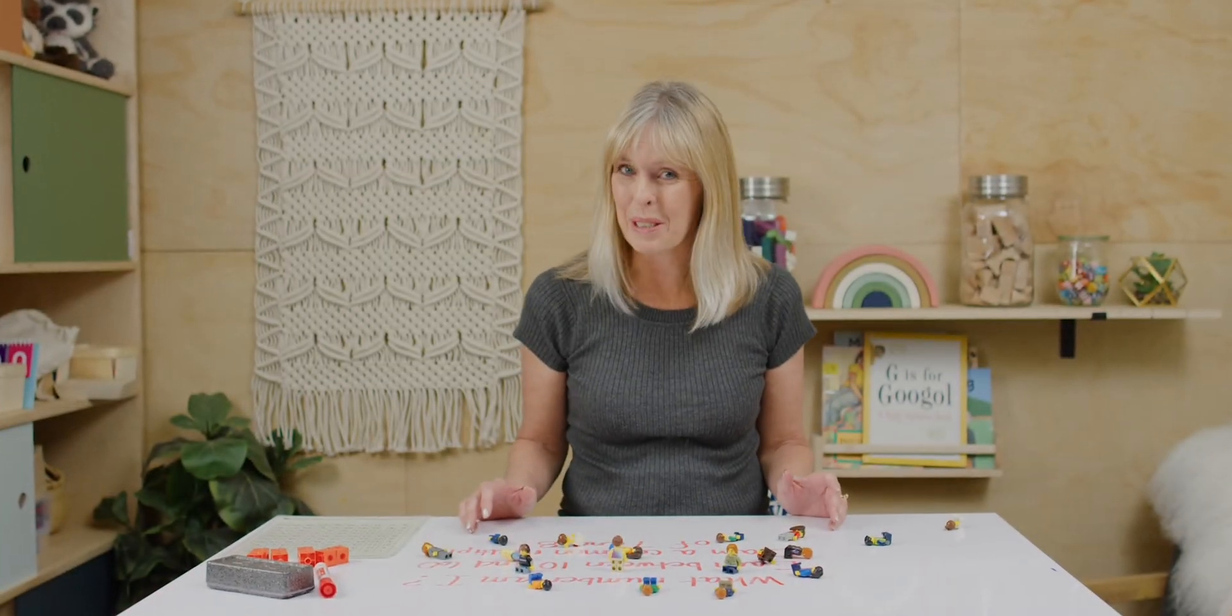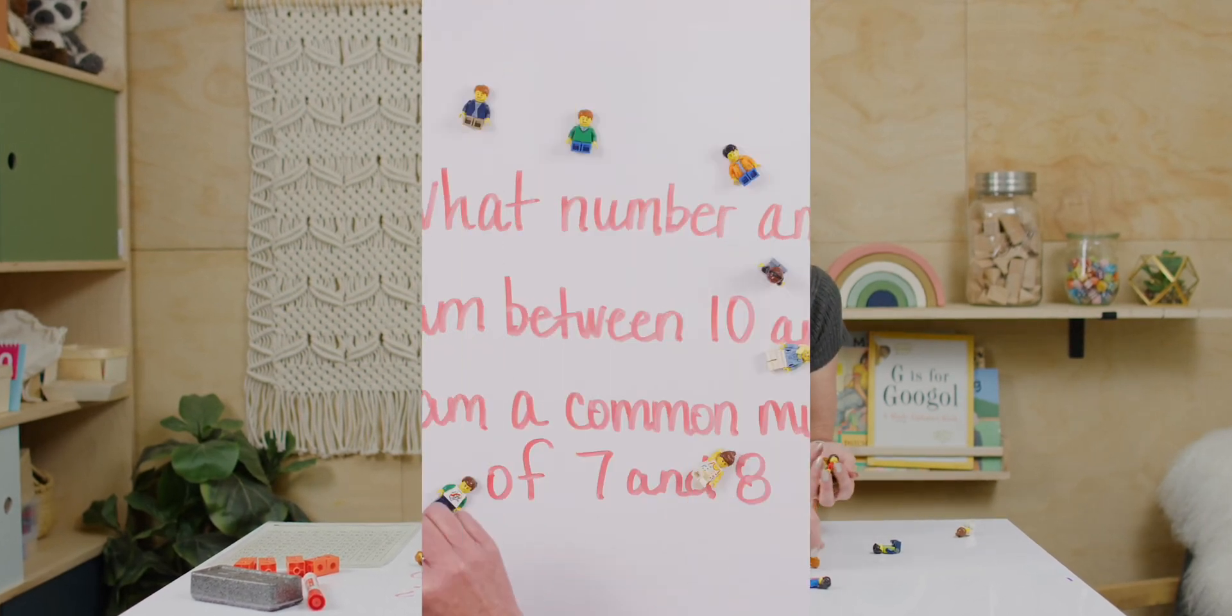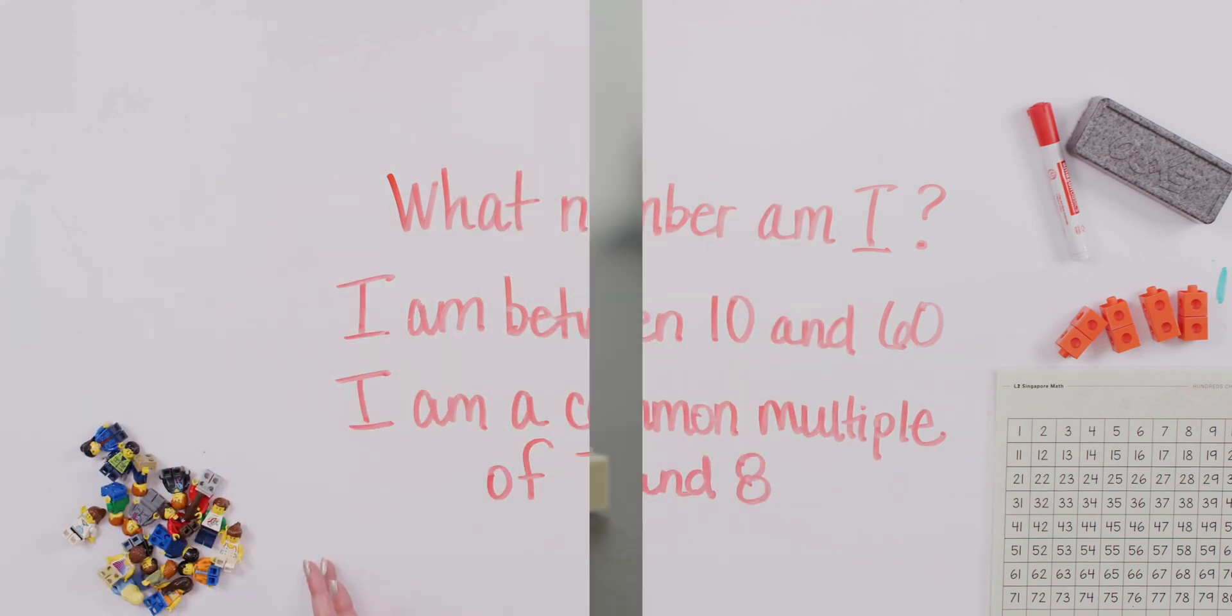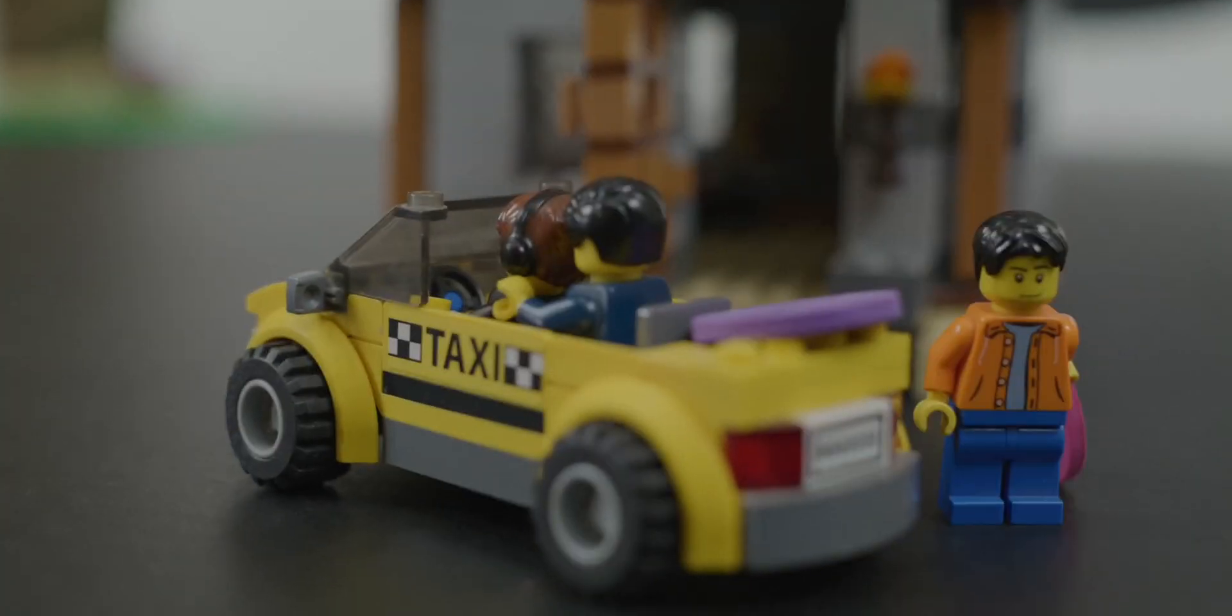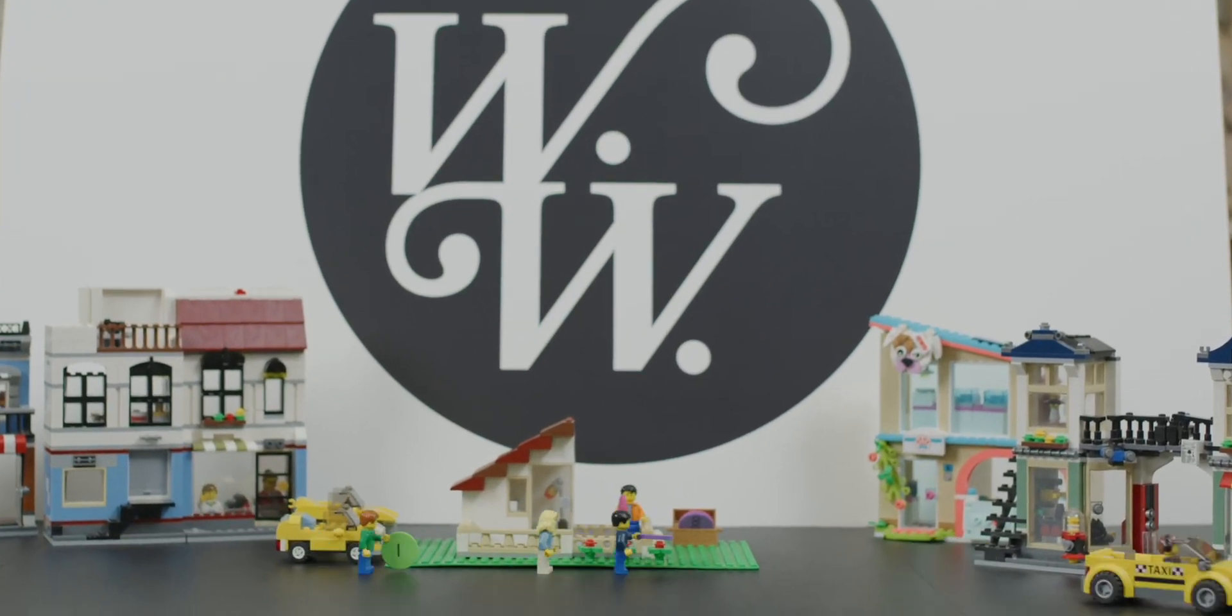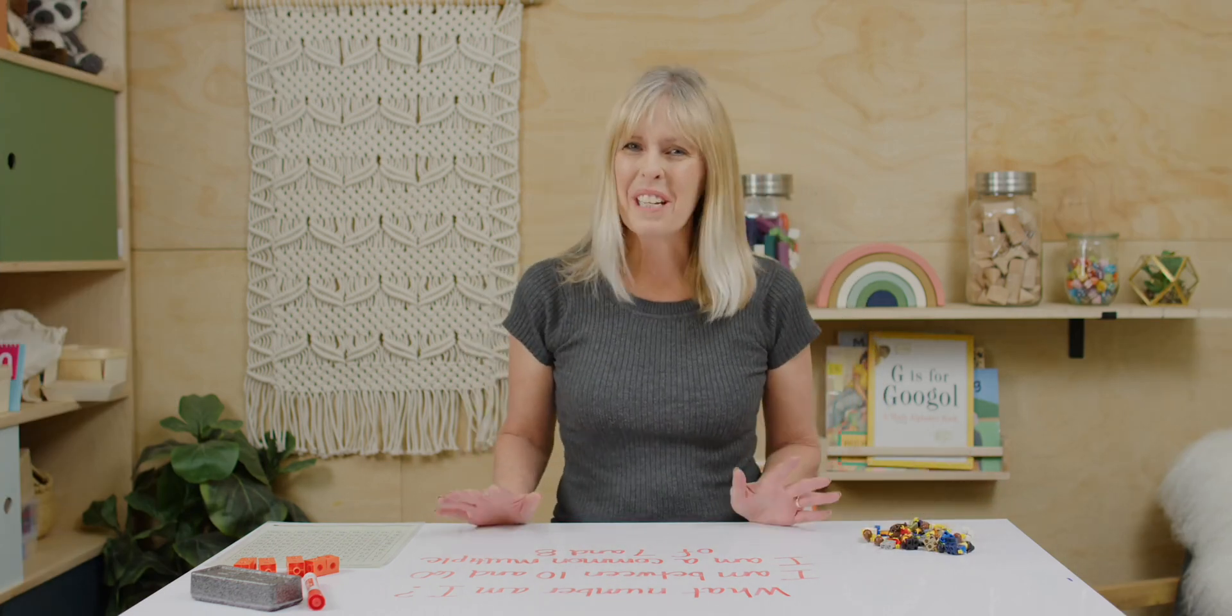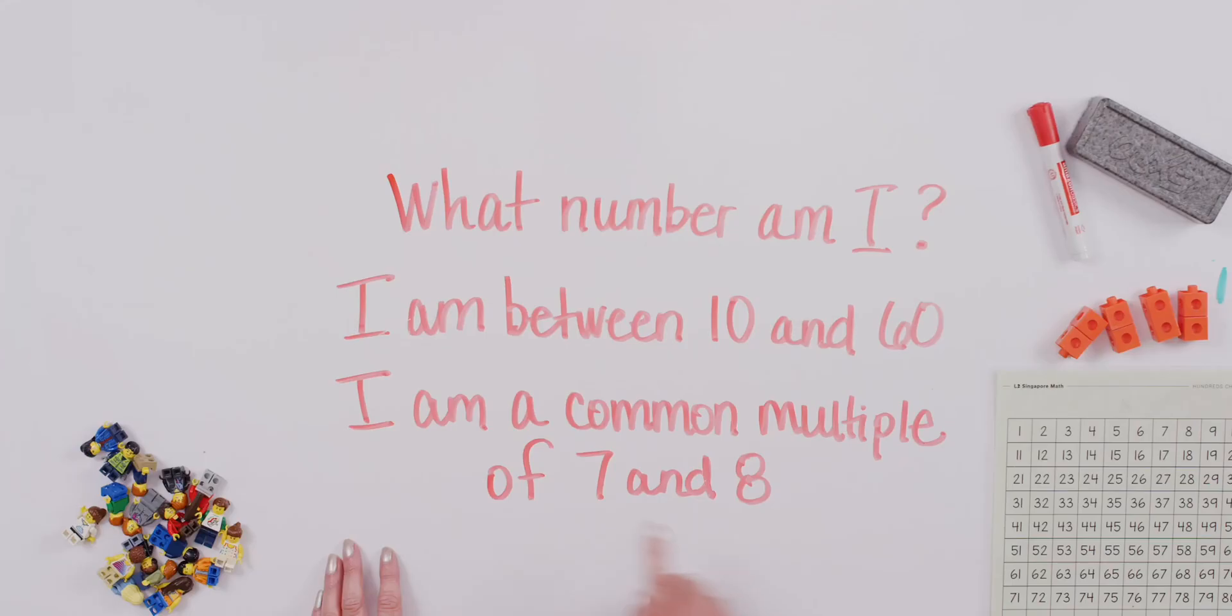I had a few friends help me with a number story today. I better clean them up so you can see what your number story is for today. Now we can read our number story together. What number am I? I am between 10 and 60. I am a common multiple of 7 and 8.